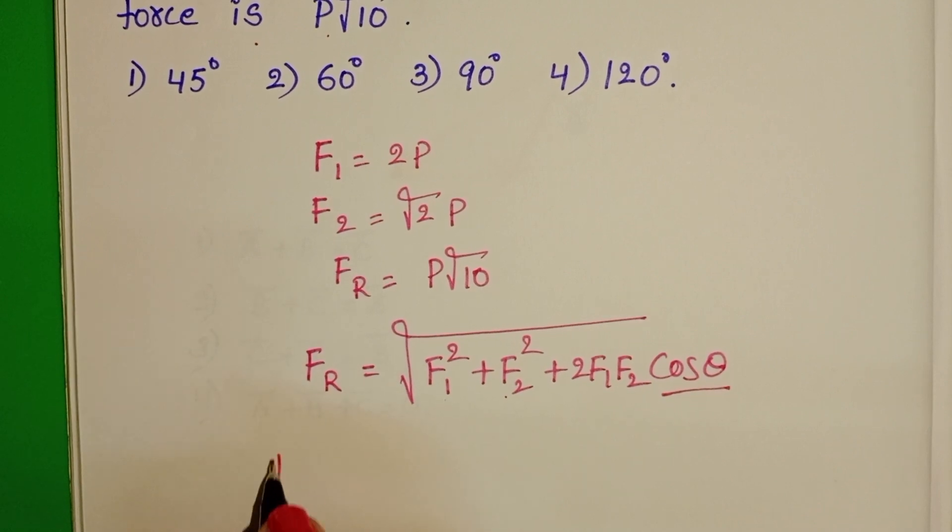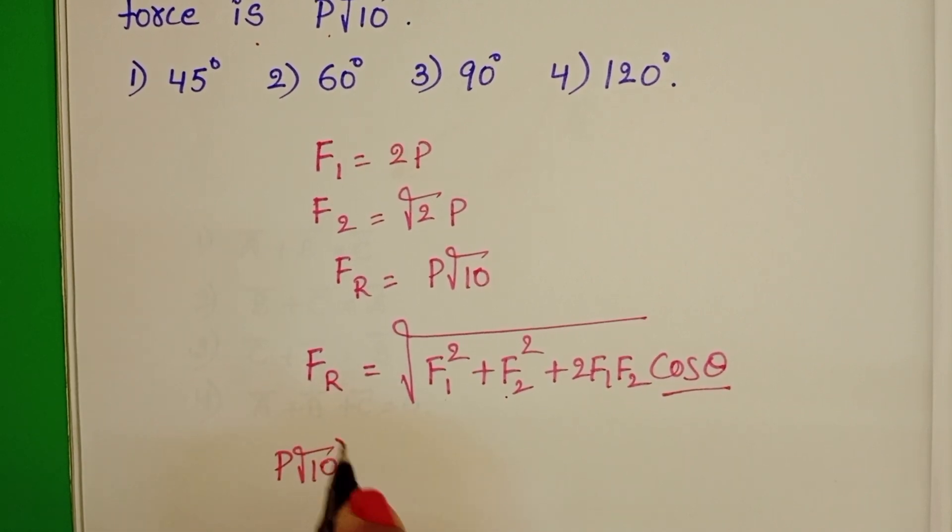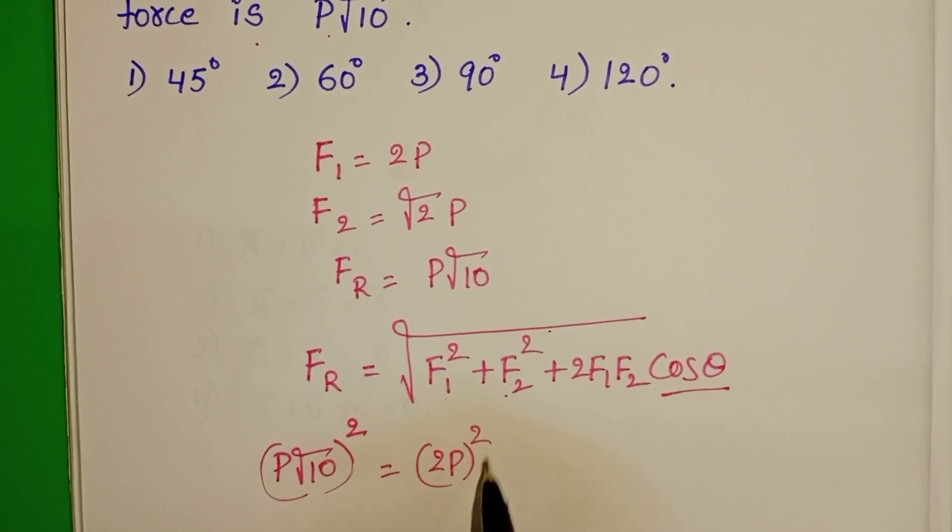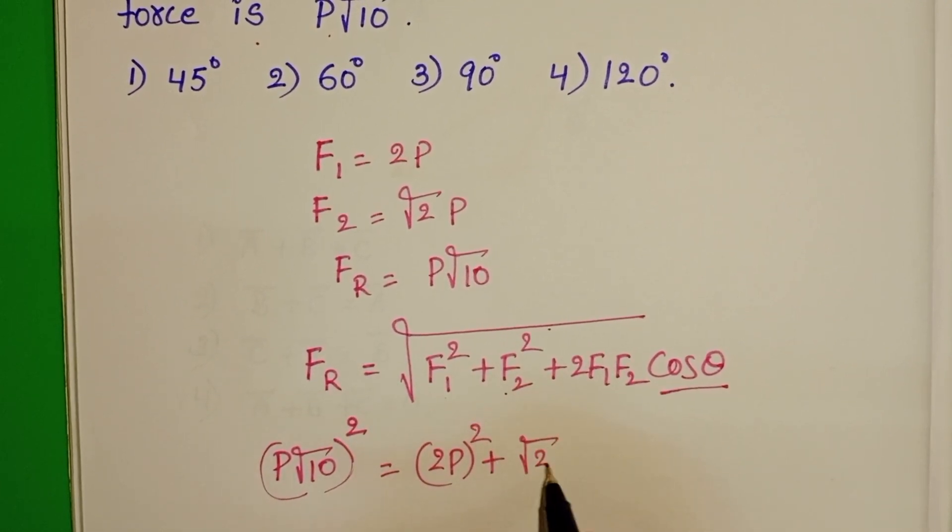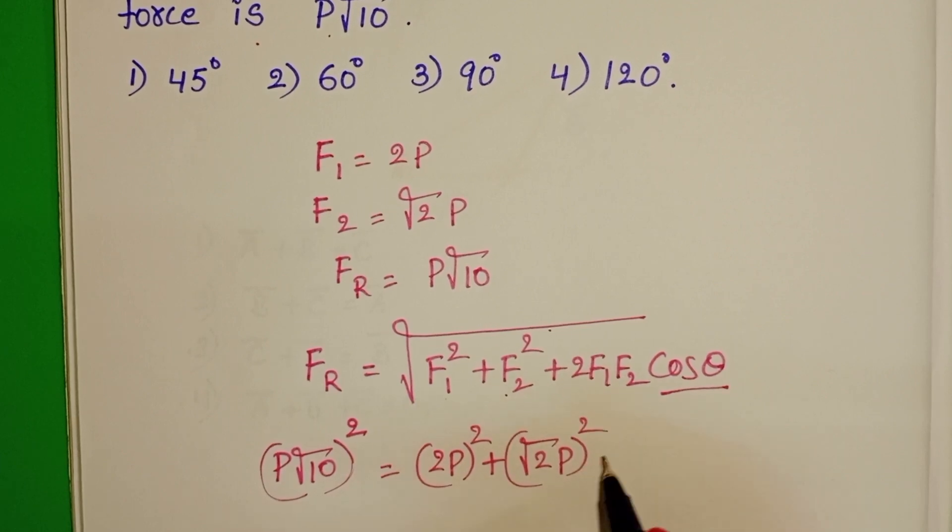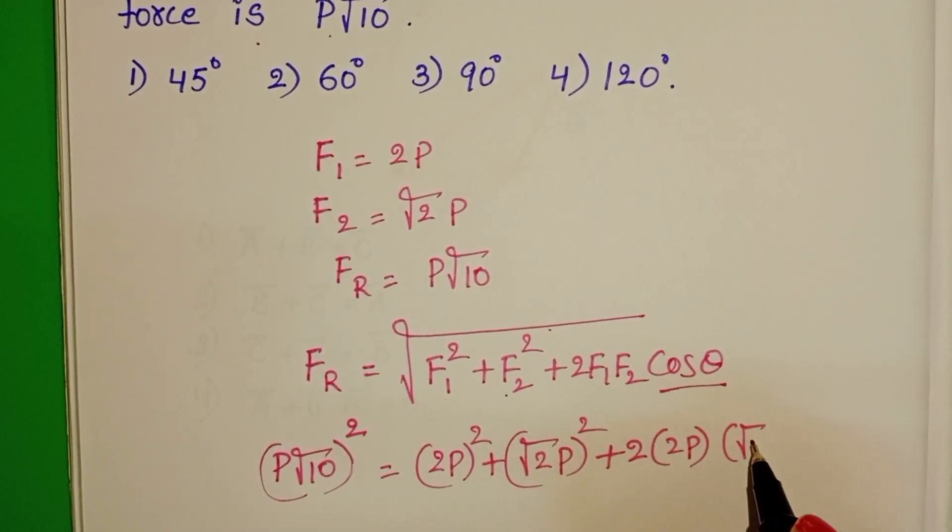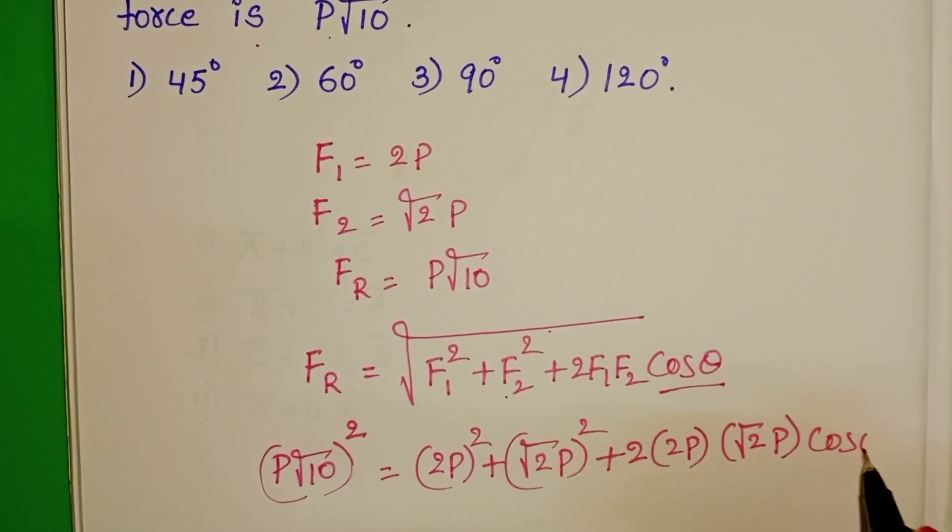In place of FR substitute P root of 10 square. In place of F1, 2P whole square plus root 2P whole square plus 2 into 2P into root 2P cos theta.